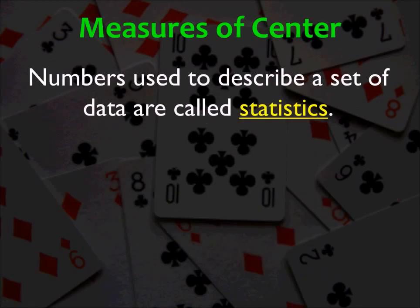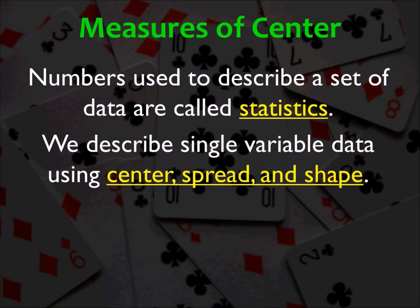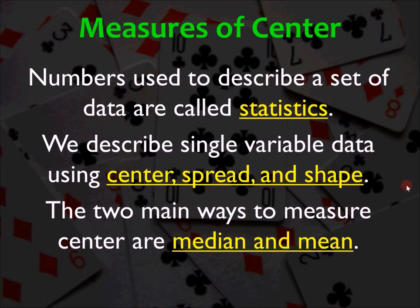Measures of center. Numbers used to describe a set of data are called statistics. So statistics is actually a defined term. It's not just a bunch of numbers that are used to describe data. And from the data, we can make conclusions, which is beyond the scope of this class. But it's something that you'll learn in stats. We can describe single variable data using three major ways to measure it. The center, the spread, and the shape. Now, the book actually doesn't talk about the shape, but we will because it's in the Common Core. We're going to look at today. We're going to look at the center. Tomorrow, we're going to look at the spread. So the two main ways to measure center are mean and median. So in the book, there's a third way they use to measure center called the mode, which is the term that appears most frequently in the distribution. That's all you need to know about it.